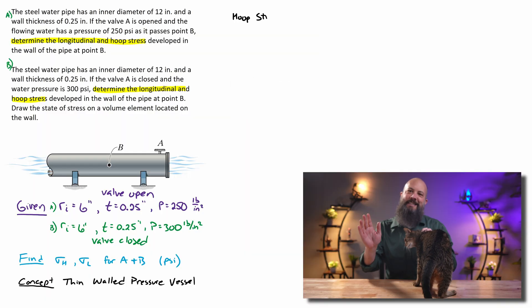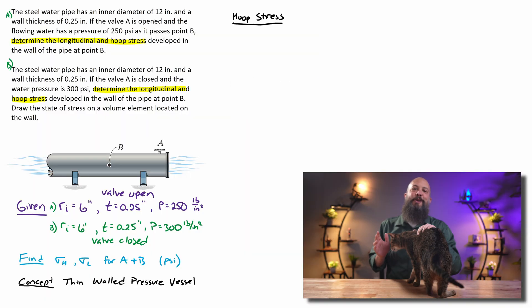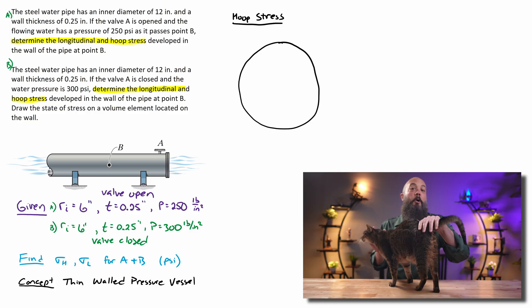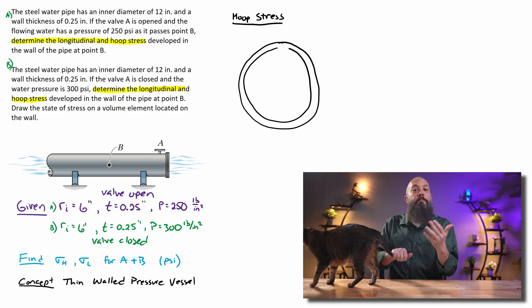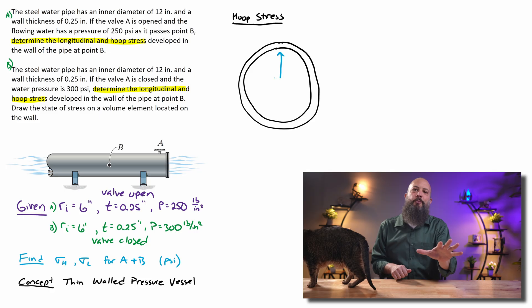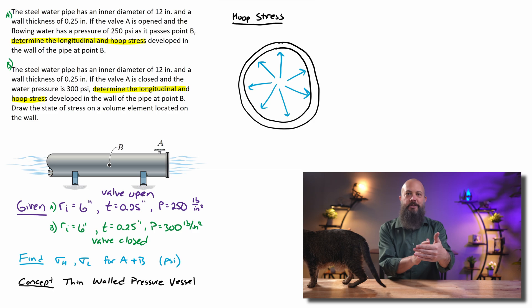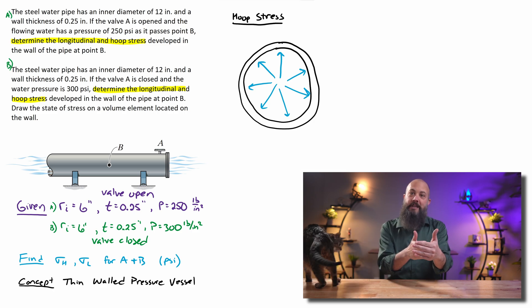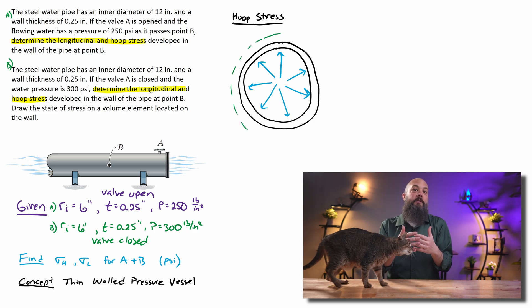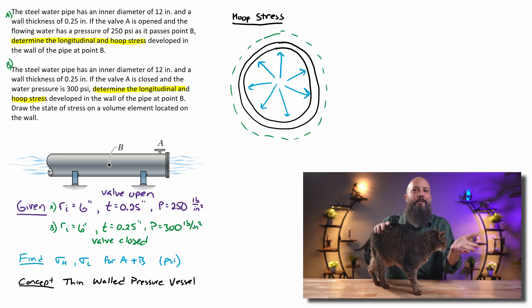All right, take it easy, you two. So thin-walled pressure vessels can also be used to represent pipes. And in this example problem, we'll look at two different possibilities: one where there is a valve shut so that there's no flow through the pipe, and then another where the valve is open and there is flow through the pipe.